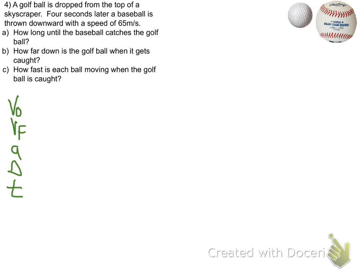All right, so this problem is about a golf ball and a baseball. If a golf ball is dropped from the top of a skyscraper, four seconds later a baseball is thrown downward with a speed of 65 meters per second.